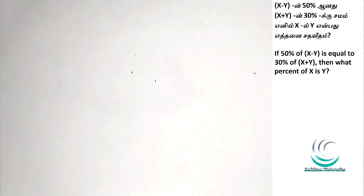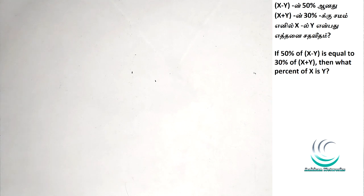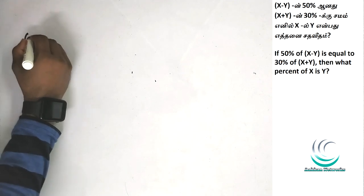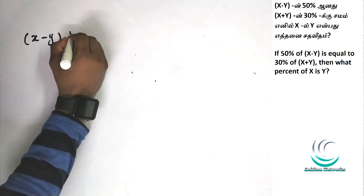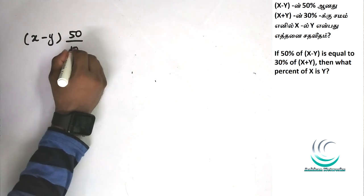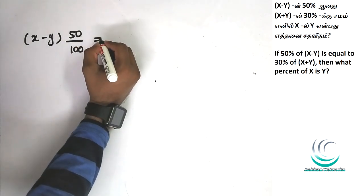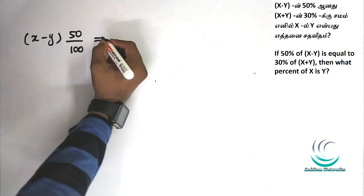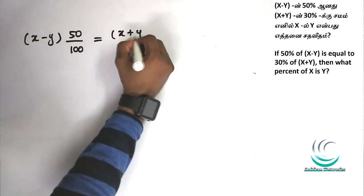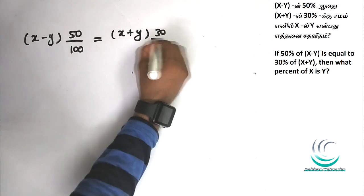Third question. This is the final answer. x minus y equals 50. So it is the final answer. 50 by 100. This question: x plus y equals 50.